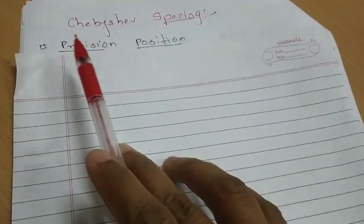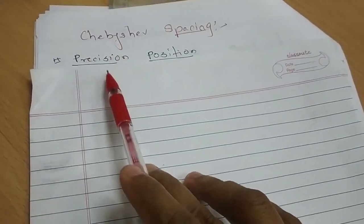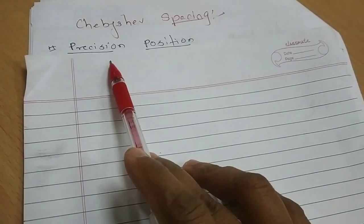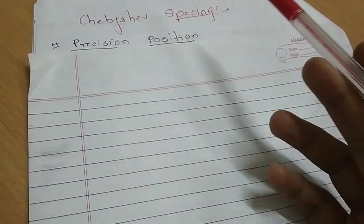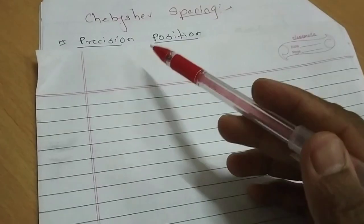That is precision position. And as the name indicates, precision position is nothing but the accuracy point, to getting accuracy point or what are the accuracy points or precision points in a mechanism.